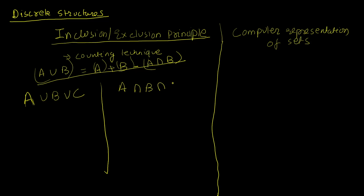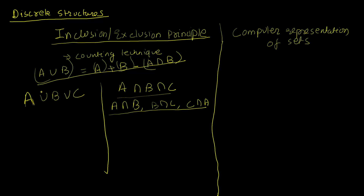If I choose two at a time, how many different intersections can I form? There's A ∩ B, B ∩ C, and C ∩ A — three intersections when choosing two at a time. And if I choose only one at a time, we just have A, B, and C individually. So we have the case of choosing one, choosing two, and choosing three.